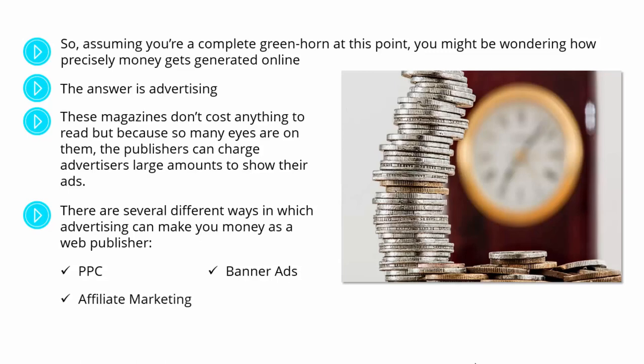Affiliate marketing is a big aspect of internet marketing, and it's actually one of the principal ways that money gets made online. Here, you get paid commission if someone buys a product that you recommend. So let's say you're a big blogger who writes about fitness. You might then recommend a certain protein shake, and each time someone buys that shake using the link you're provided with — which is how they know you sent them — you will earn 30% of that sale.